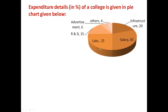The given problem is: expenditure details in percentage of a college is given in a pie chart. The total expenditure of the college — on infrastructure: 20%, on salary: 30%, on labs: 25%, on R&D: 15%, on advertisement: 6%, and others: 4%. This is the distribution of expenditure of a college in percentage.